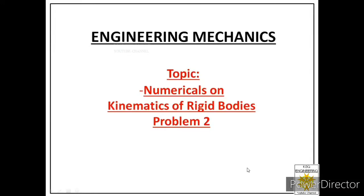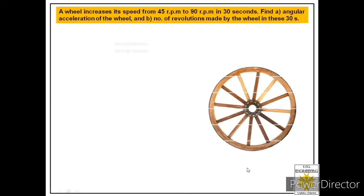Welcome students. Today we will solve problem number 2 on kinematics of rigid bodies. So let us start today's lecture. Let us read the statement first. A wheel increases its speed from 45 rpm to 90 rpm in 30 seconds. Find part A: angular acceleration of the wheel, and part B: number of revolutions made by the wheel in these 30 seconds.